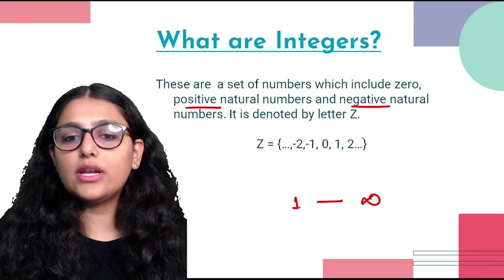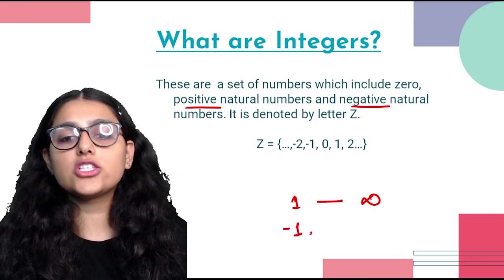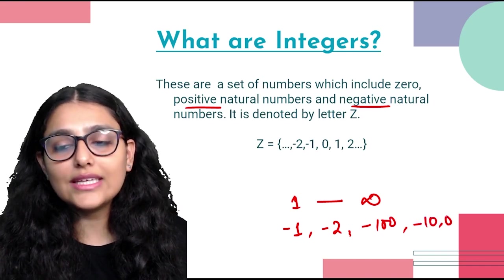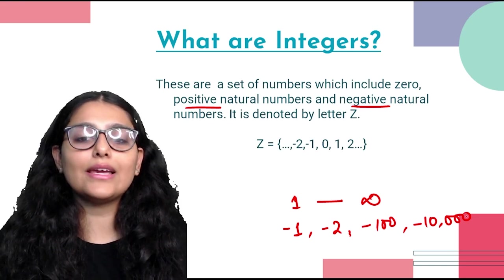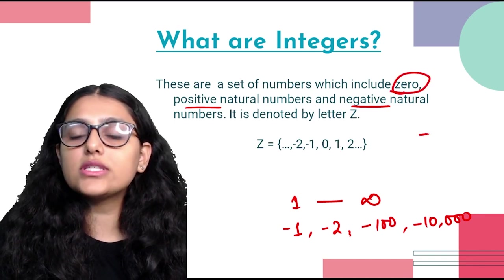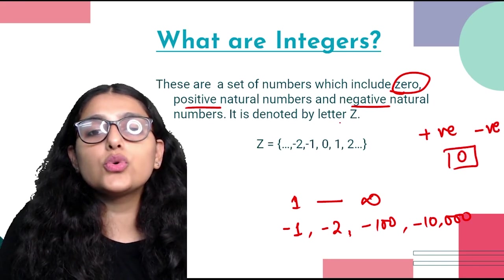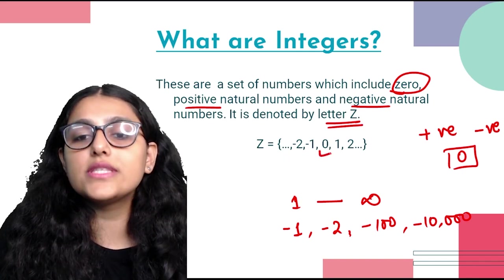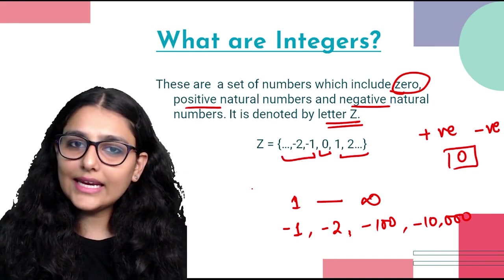Negative natural numbers are the opposites of positive numbers with a negative sign — like minus 1, minus 2, minus 100, minus 10,000, minus 1 billion — going from minus 1 to minus infinity. Integers also include zero. We usually denote integers by the letter Z. Z contains a set of zero, positive numbers up to infinity, and negative numbers up to infinity.